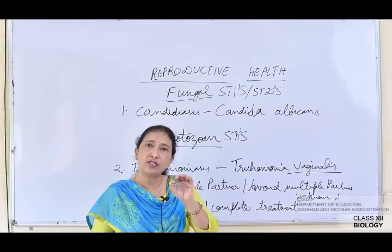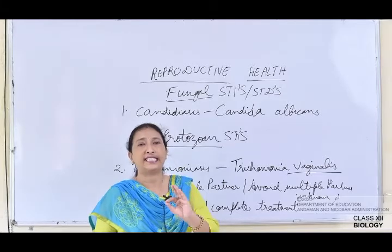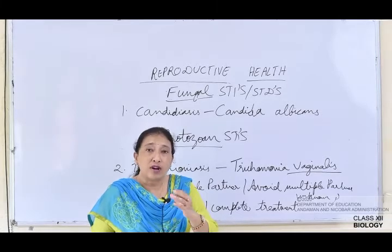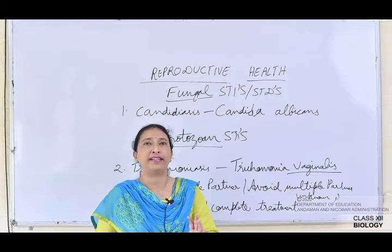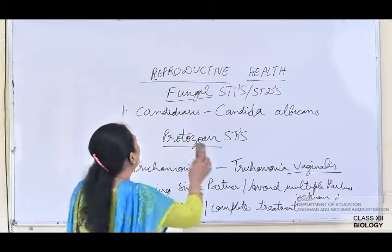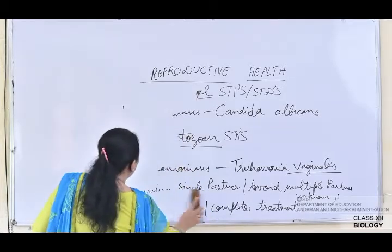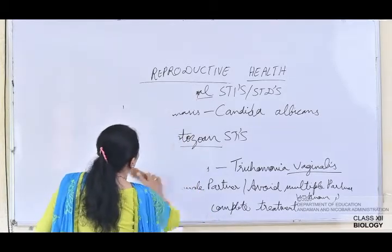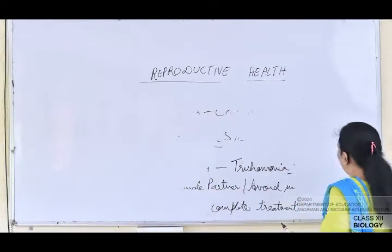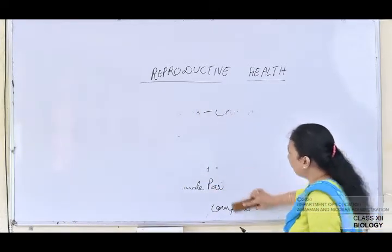Prevention is the only method by which AIDS can be prevented — it cannot be cured. After this, we will see the various ways by which infertile couples can have children.